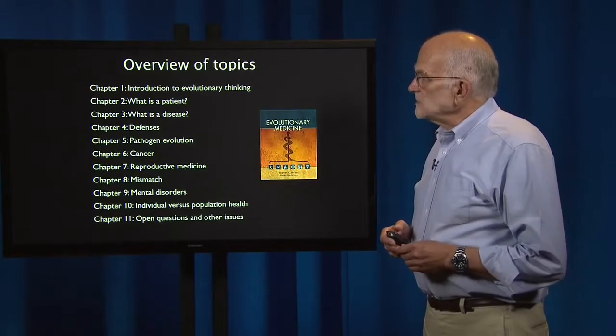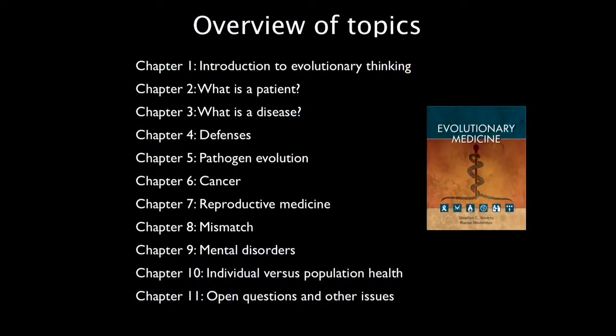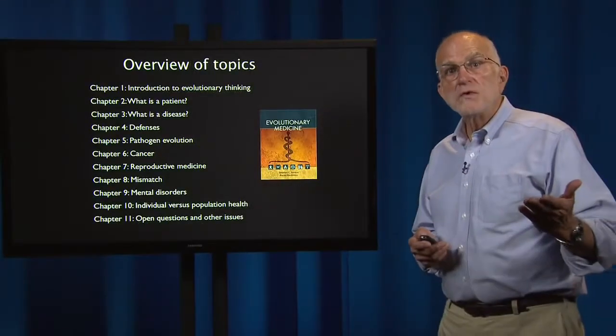Here's an overview of the topics. In Chapter 1, we introduce evolutionary thinking, and then we ask two rather interesting questions: what is a patient and what is a disease? That issue — what is a disease — sets up the discussion of defenses and then takes us on into pathogen evolution, the discussion of cancer, reproductive medicine, and the issue of mismatch. We then go on into mental disorders, discuss how individual versus population thinking is involved in health, and the book concludes with open questions.